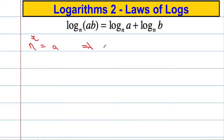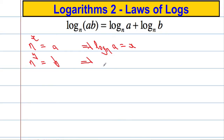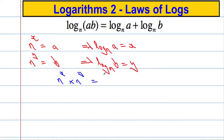That would imply that log to the base n of A gives me an answer of x — so the power of n that gives me an answer of A is x. Likewise, n raised to a power y gives me an answer B. Now what happens if we take n to the power x and multiply it by n to the power y? That's going to equal A times B. And using the laws of indices, n to the power x plus y gives a result of AB.